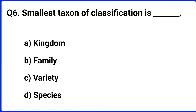Question number six. The smallest taxon of classification is? The right answer is option D: species.